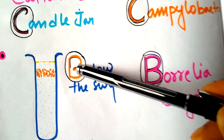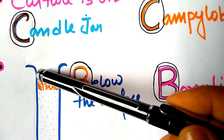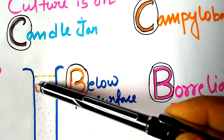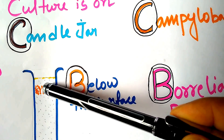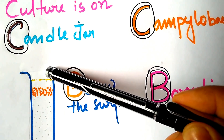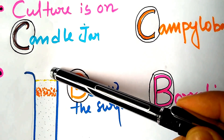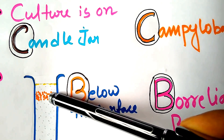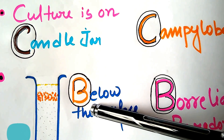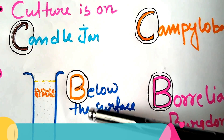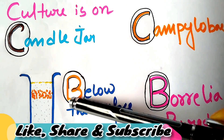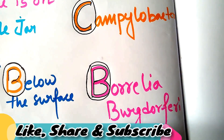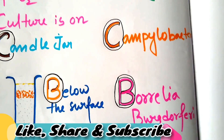In the thioglycolate broth, they lie below the surface. At the surface there is more oxygen concentration, but below the surface there is optimum oxygen concentration for microaerophilic organisms. The keyword is 'below' — B for Borrelia. That finishes our mnemonic.